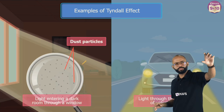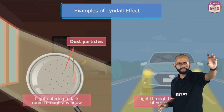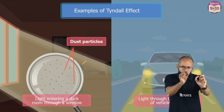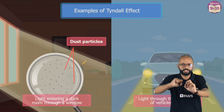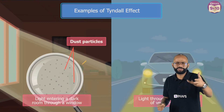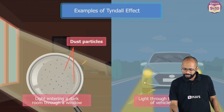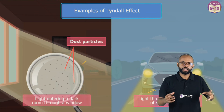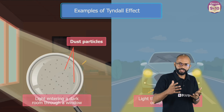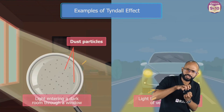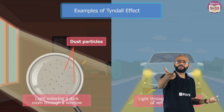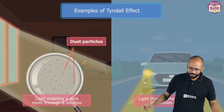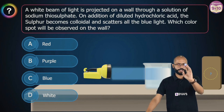Another example: in your room, if sunlight enters through a small opening, you can see the path of light and tiny particles moving — that is Tyndall effect due to dust in the room. In winter, when there is fog, the headlights of vehicles produce a very visible beam — again Tyndall effect, because fog's water molecules act as colloidal particles scattering the light.